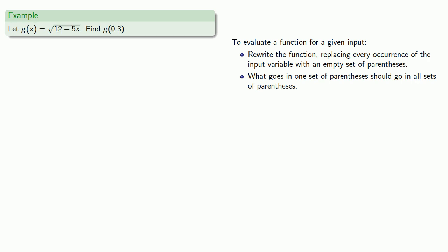This is going to be true no matter what our function looks like. So let's have this function. We want to find g of 0.3. So paper is cheap. Let's copy down our function first.